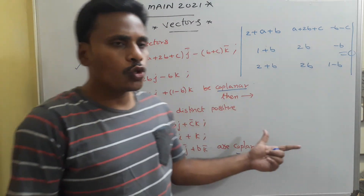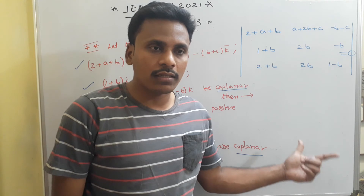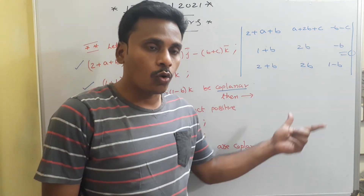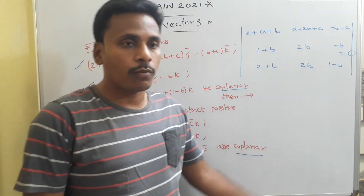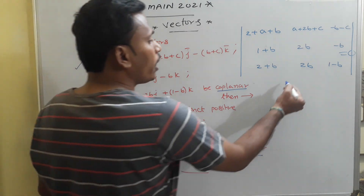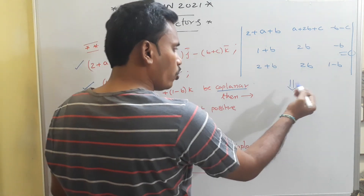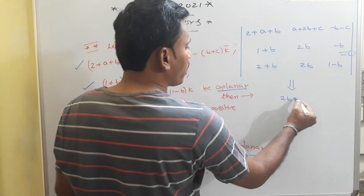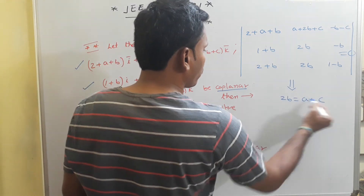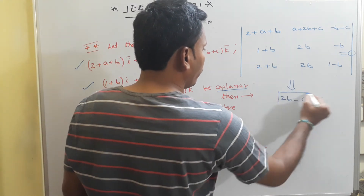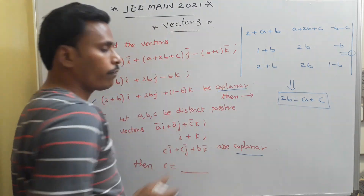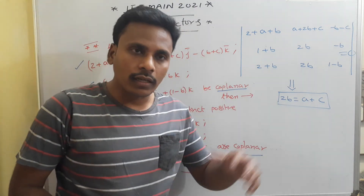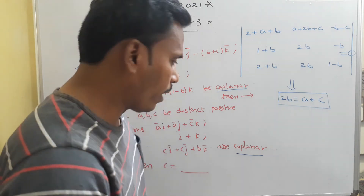Using the usual matrix method and row/column operations to evaluate the determinant, we get the relation 2b = a + c. That is the answer for this first coplanarity problem from JEE Mains 2021, showing that the solution leads back to determinants of matrices.